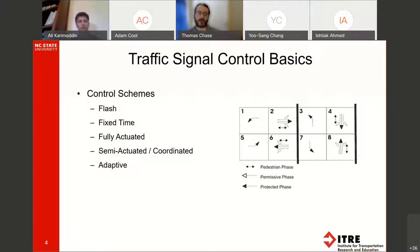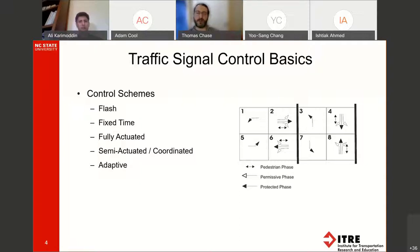Fixed time traffic control is a much older system still used in some cases where you don't want to put detection in the roadway. The fixed time control is exactly what it sounds like — you time out exactly how long you want each phase and each direction to have green, you time out the yellows and red periods, and the signal operates solely on that information. In the old days they would have a mechanical controller with a dial spinning inside, and every time a wire touched a certain time on the dial it would change phases.